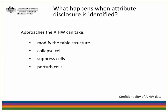The approaches the AIHW may take when confidentialising a table include modifying the table structure, collapsing cells, suppressing cells, or perturbing cells.